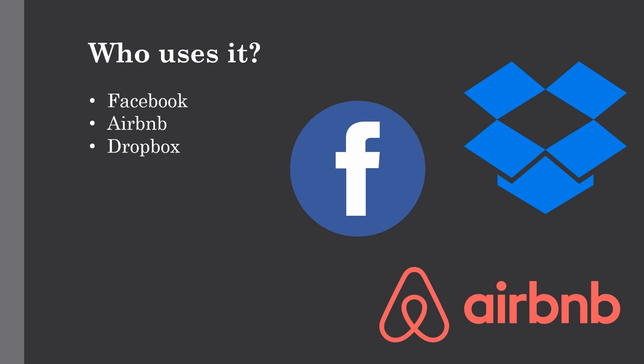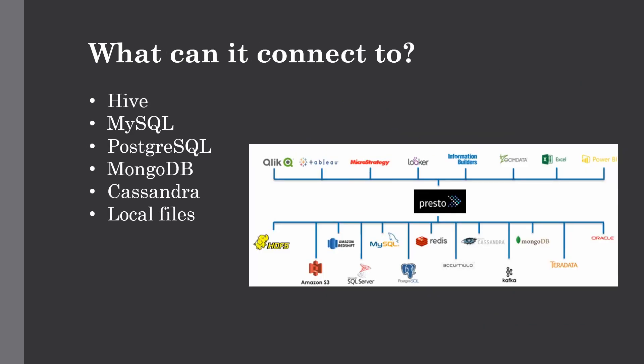Presto reads directly from HDFS as well as many other relational databases, making it good for submitting queries across multiple databases. As you can see in the figure, Presto can connect to Hive databases, HDFS, local files such as Parquet or JSON, and also Cassandra — which is a huge advantage over Drill. It also connects to cloud storages such as Amazon S3 and can be integrated with Kafka to work with streams of data. Presto can work with both SQL and NoSQL databases, making it a very versatile choice.